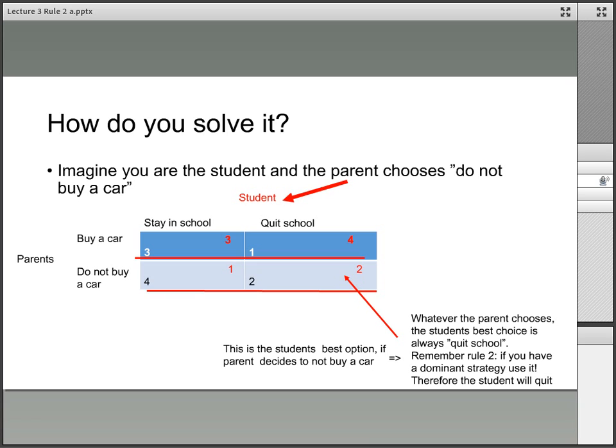The student's dominant strategy is quit school, and the parent's is don't buy a car. You end up in the bottom-right corner. This is counterintuitive because the top-left corner leaves both players better off. But when making decisions simultaneously without agreement, you should follow your dominant strategy.